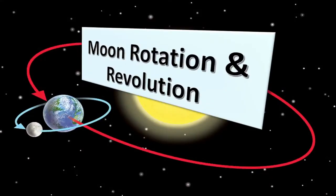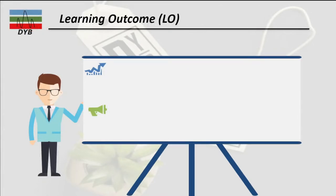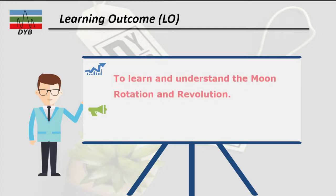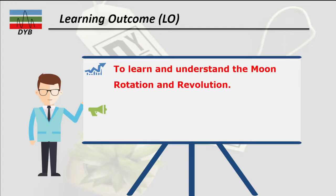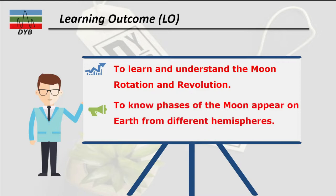Hello, good day to all of you. In this video lecture we are going to learn about the moon rotation and revolution, and also look at what are the phases of the moon which appear on different hemispheres of the earth — what you see in the north, in the south, and at the equator. We have some learning outcomes: first, to understand moon rotation and revolution; second, to know the phases of the moon as seen from the northern hemisphere, southern hemisphere, and equator.